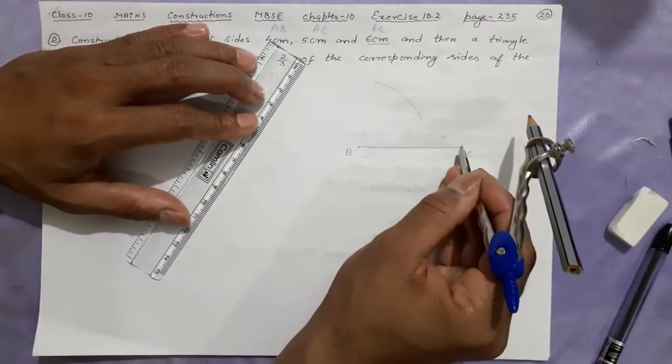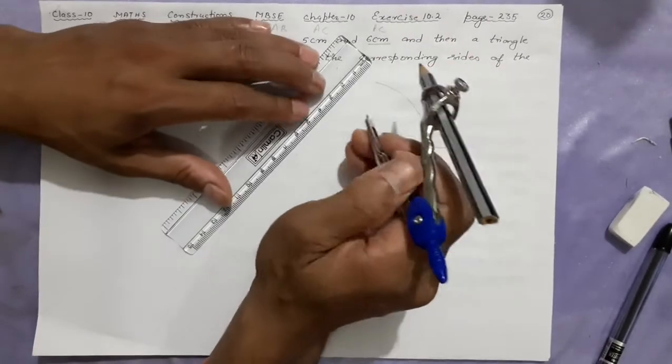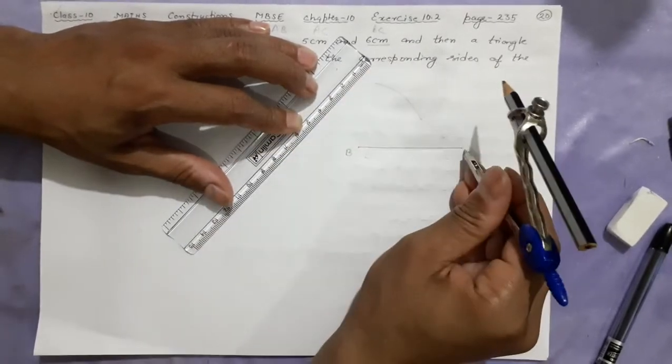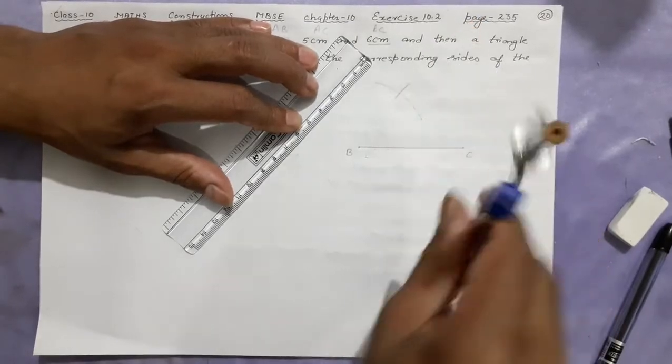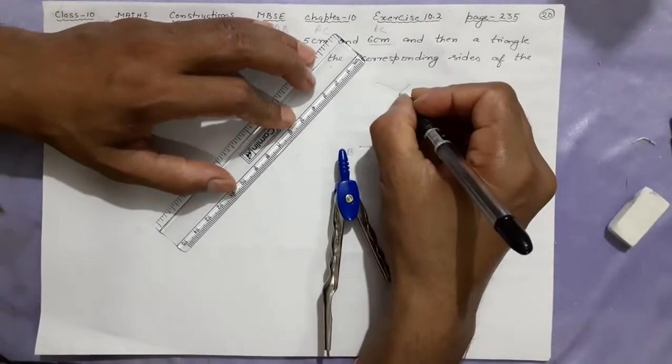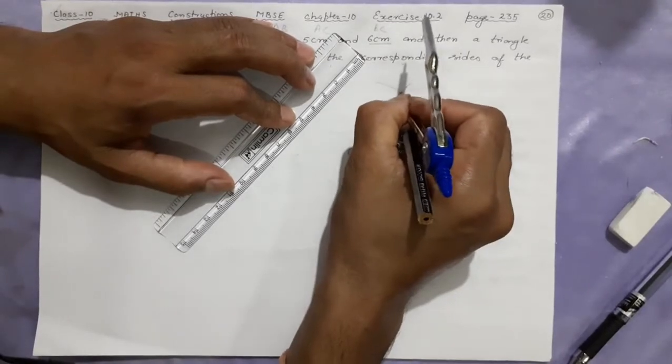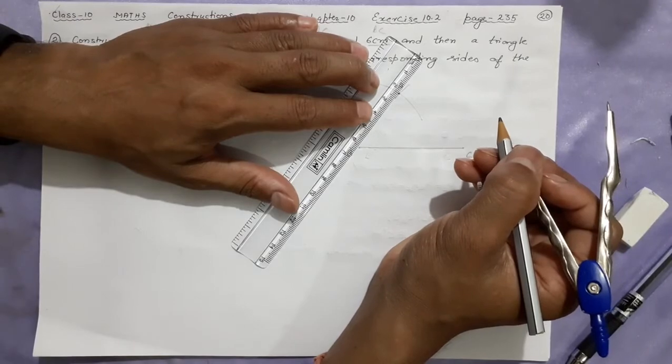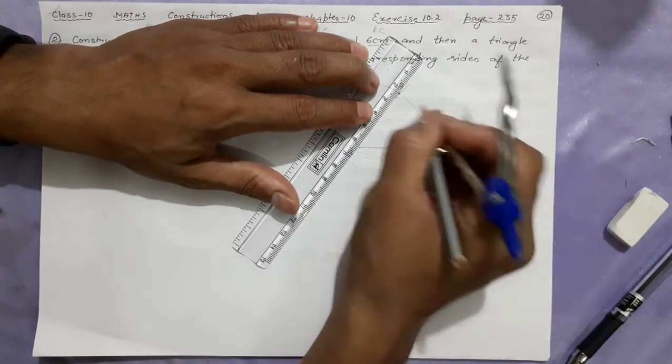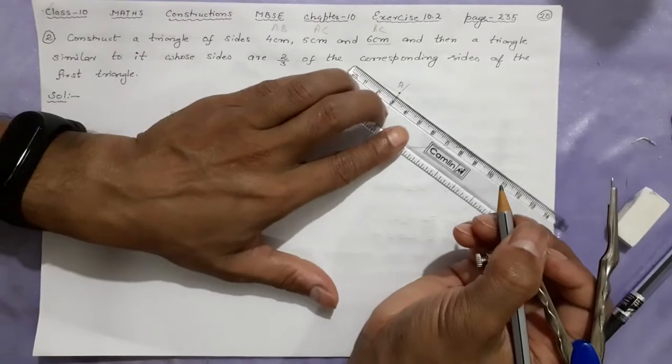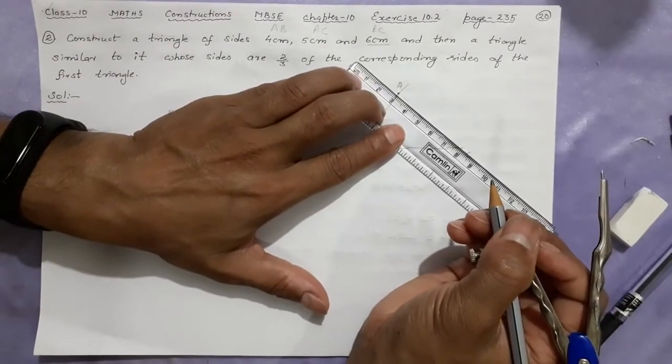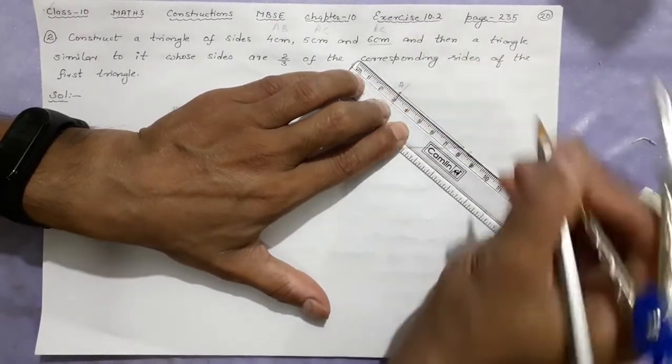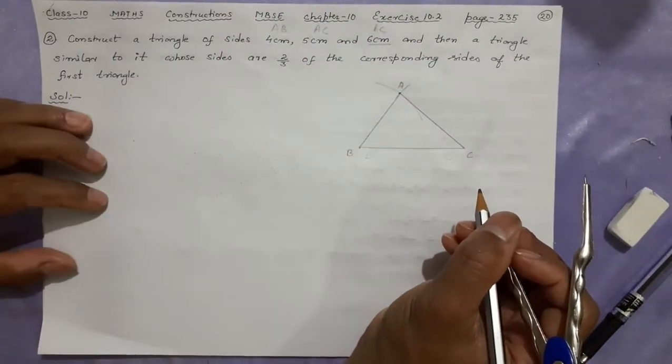AC. That means A will be somewhere here and C will be here. AC is 5 cm. Choose that 5 cm. From here, take this. From here, you join this. Here is this. Done. This is ABC completed.